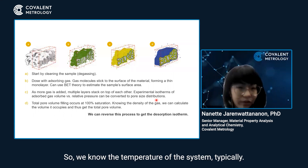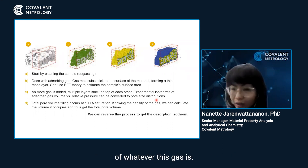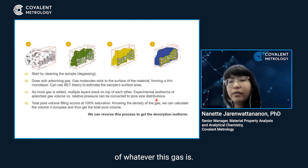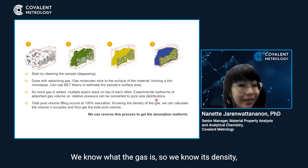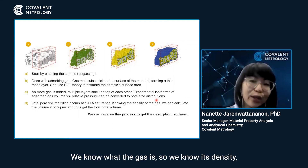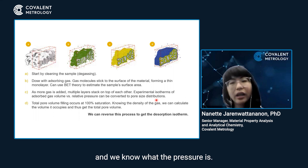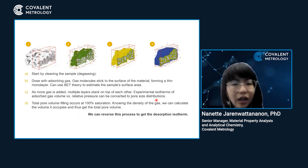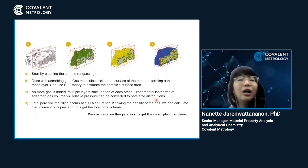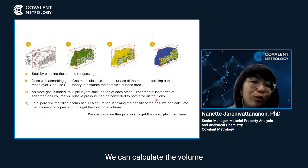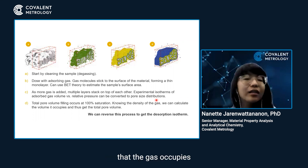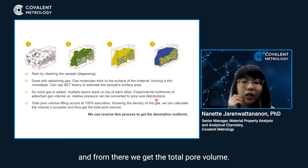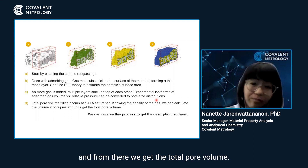We know the temperature of the system — typically we're running it at the boiling point of whatever gas we're using. We know what the gas is, so we know its density, and we know the pressure. Using PV = NRT, we can calculate the volume that the gas occupies, and from there we get the total pore volume.